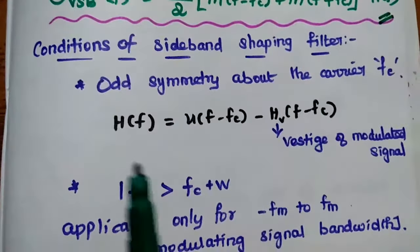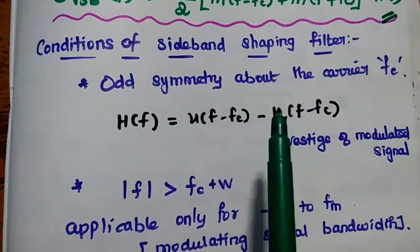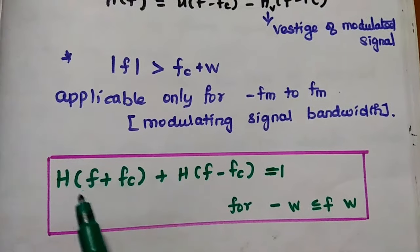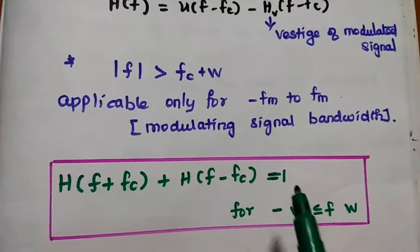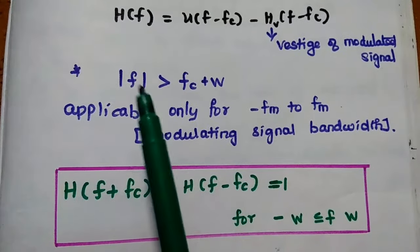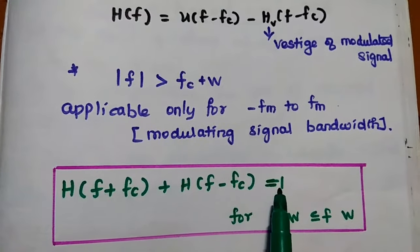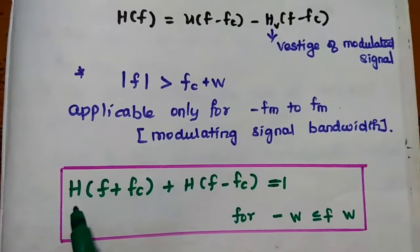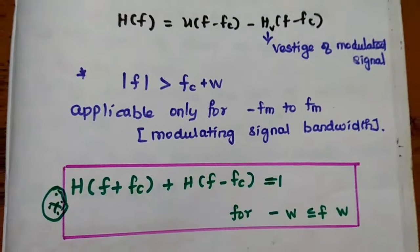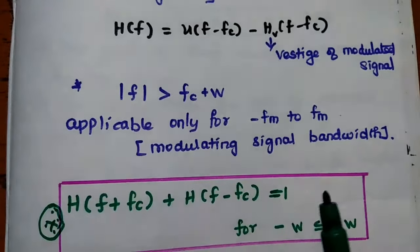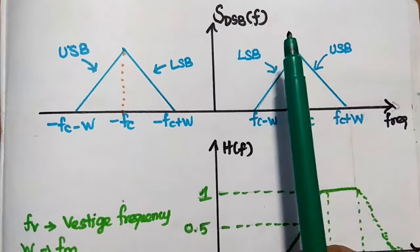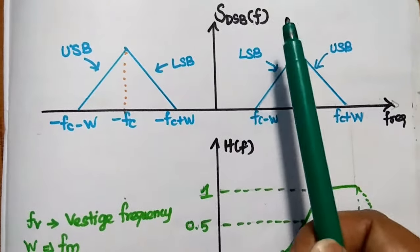The conditions of the sideband shaping filter are very important. The first condition is that it should have odd symmetry about the carrier frequency. The second, very important property is: H(F + FC) + H(F − FC) = 1 over the bandwidth of the modulating signal. This is the condition for the band shaping filter, and we are going to use this property on the demodulation side as well.